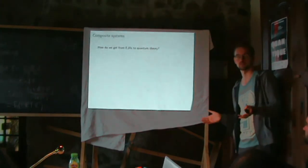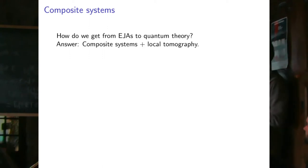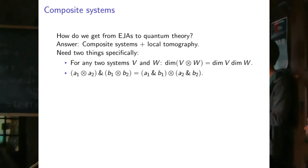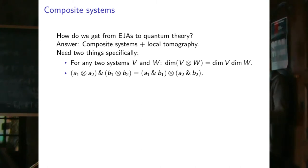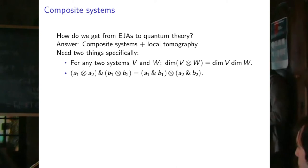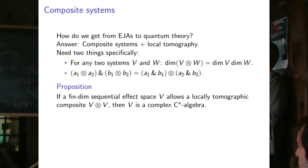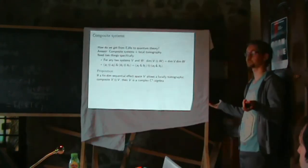We're now very close to quantum theory. The question is: how do we get from Euclidean Jordan algebras to quantum theory? The answer, as in many previous reconstructions, is composite systems with local tomography. Specifically, if we have two sequential effect spaces, we require their composite to satisfy the dimension multiplication property, and we require this natural property about sequential measurement of independent effects — if you have an independent effect on each subsystem and do them sequentially, it's the same as doing them sequentially in each separate system. Then you can show that any finite-dimensional sequential effect space admitting a locally tomographic composite must be a complex C*-algebra, and for me, that's quantum theory.